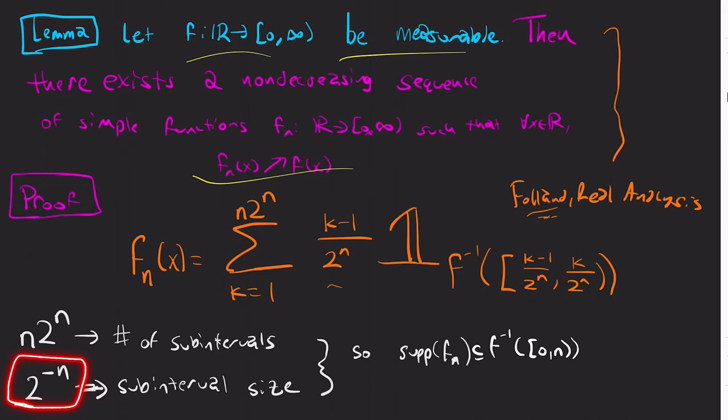2 to the minus n, or 1 over 2 to the n, is my subinterval size, cutting along the codomain. n times 2 to the n is my number of subintervals. So 2 to the n times 2 to the minus n is 1. So that's why I need to multiply by n, so that I keep cutting higher and higher and higher and higher numbers along my codomain.